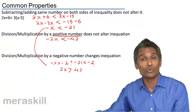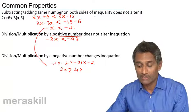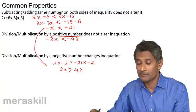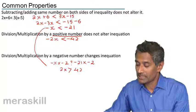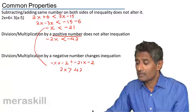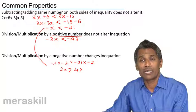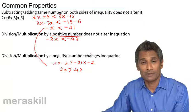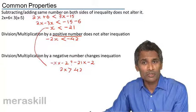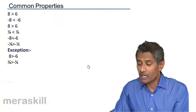To summarize: when we subtract or add the same number on both sides, the inequality does not get altered. Division or multiplication by a positive number does not alter the inequality either. But whenever we divide or multiply by a negative number, the inequality changes. Whether it's an equation or inequality, we always perform the same operation on both sides — but with a negative multiplier or divisor, we must flip the inequality.